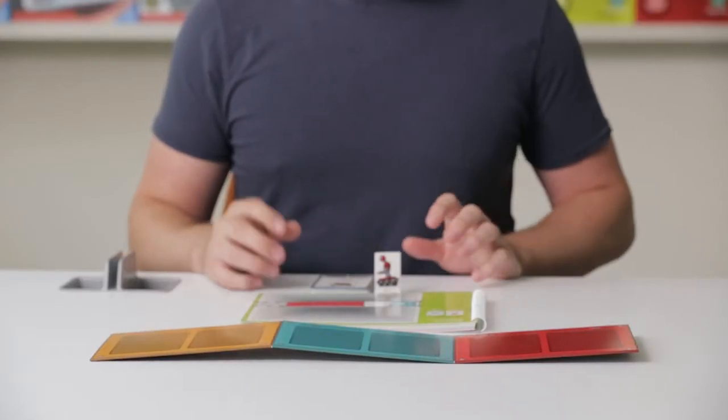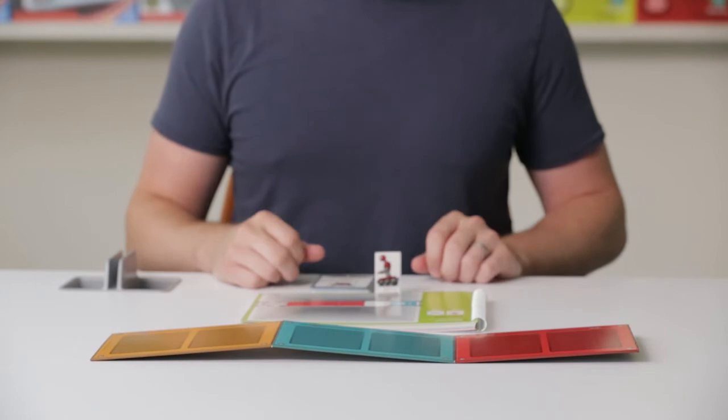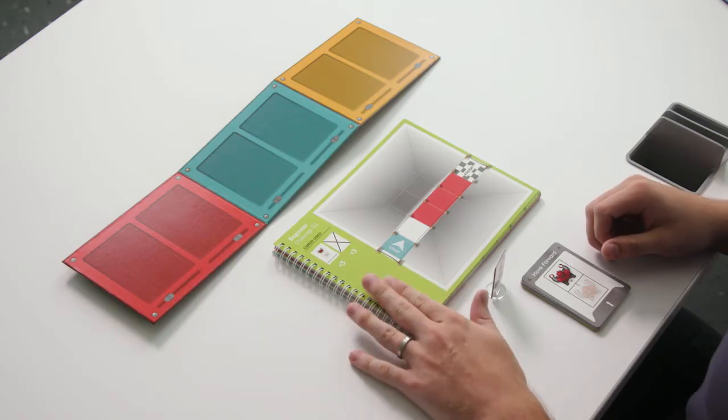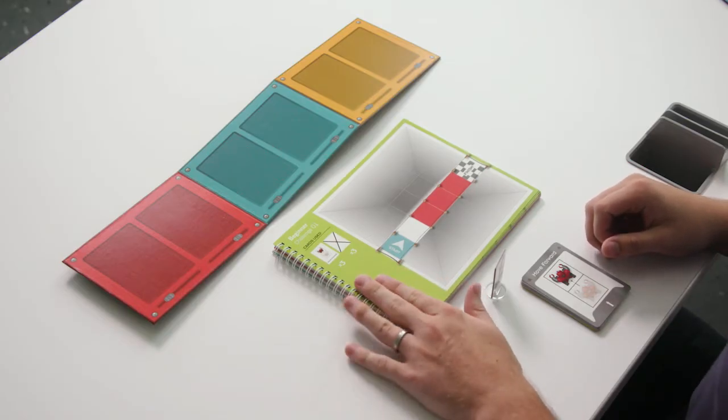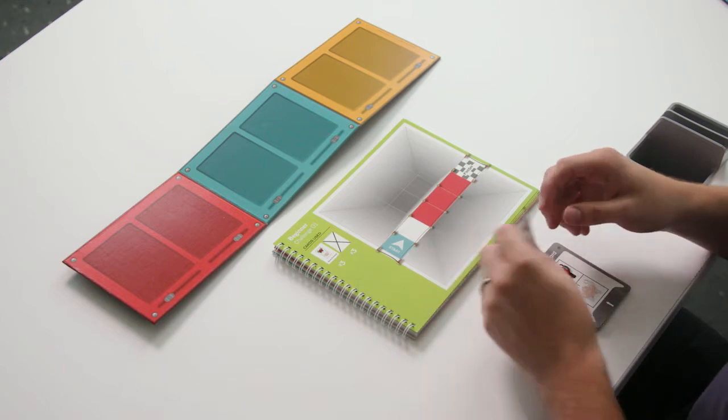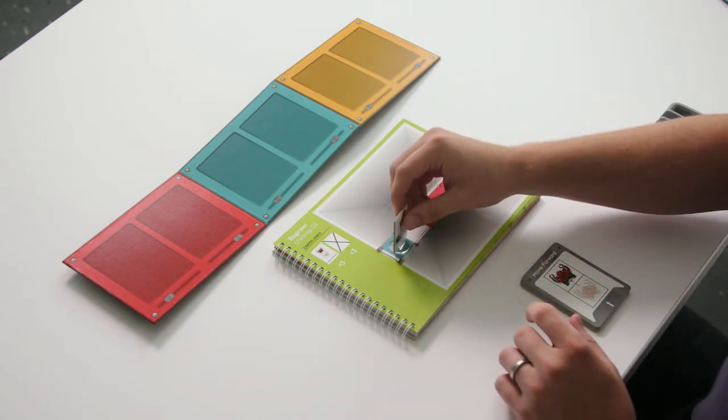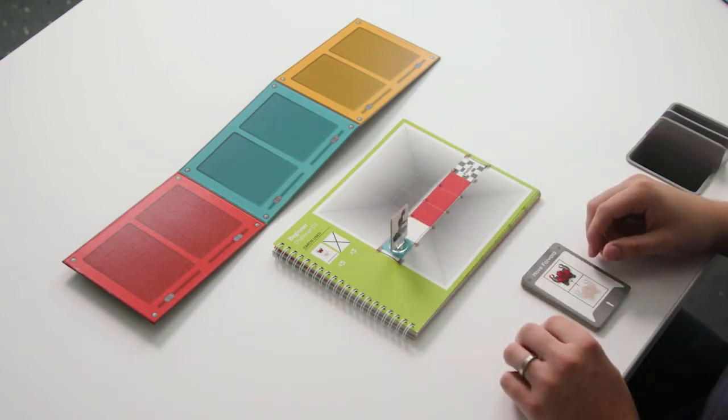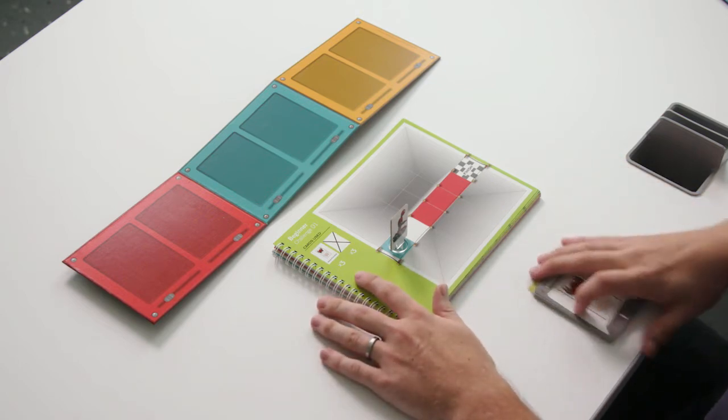Let's take a look at beginner challenge number one as an example. Our game board gives us all the information we need to solve this challenge. First we have our starting position where we put our robot and second we know that we need to take six of our movement cards to build procedures with.